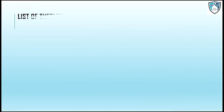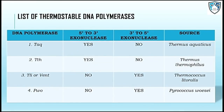Here is a list of thermostable DNA polymerases: Taq, Tth, Tle, Vent, and Pbo. Taq has no exonuclease activity in the 3' to 5' direction, whereas Tle, Vent, and Pbo have 3' to 5' exonuclease activity, which is a proofreading activity.